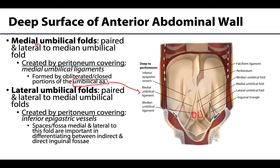Last are the lateral umbilical folds, which are personally the easiest to locate because you can typically see the inferior epigastric vessels deep to the peritoneum — that is what forms the fold. This is not a case of peritoneum overlying an embryonic structure; the inferior epigastric vessels are very active and open during adult life, supplying much of the abdominal wall. The fossae medial and lateral to the lateral umbilical folds are important for differentiating indirect from direct inguinal hernias, which will be discussed in an upcoming video.